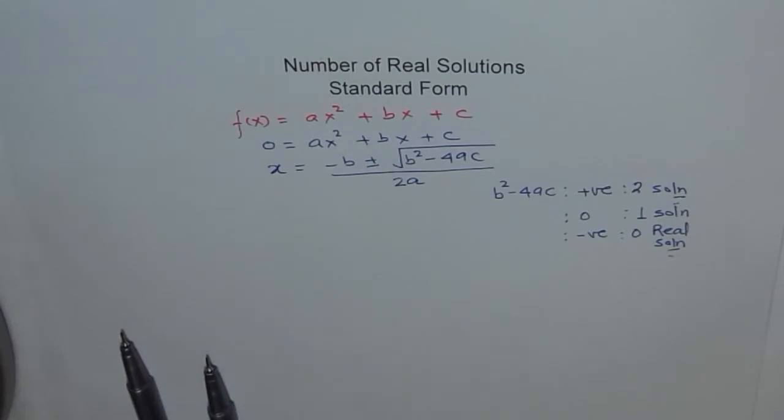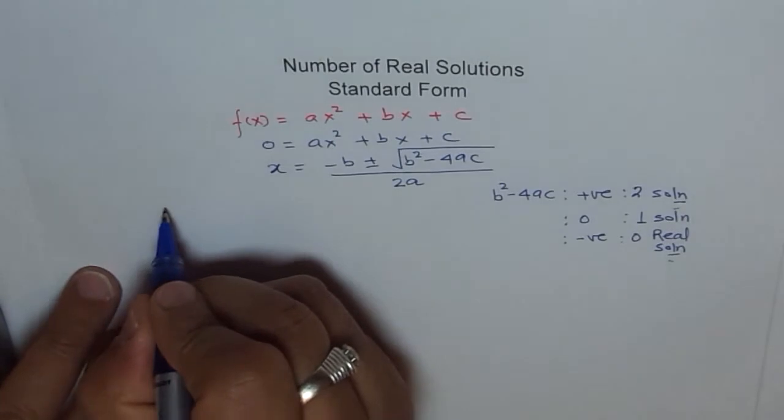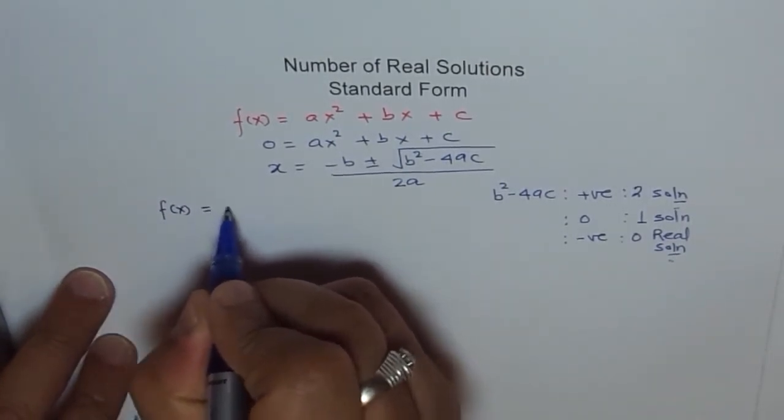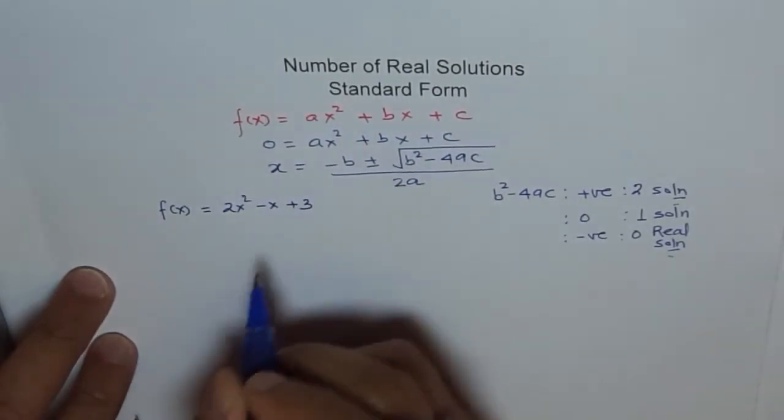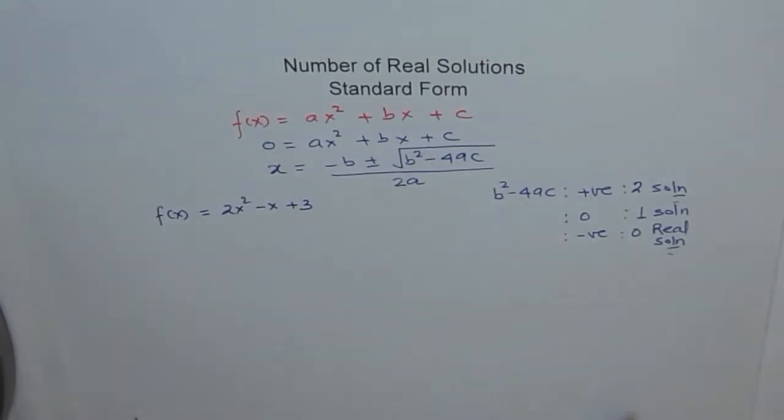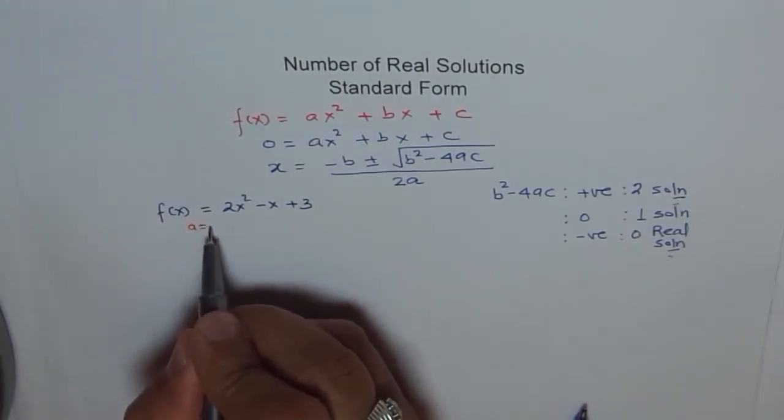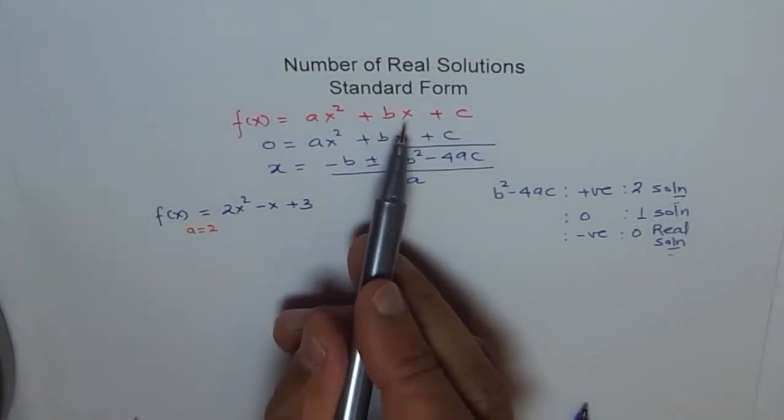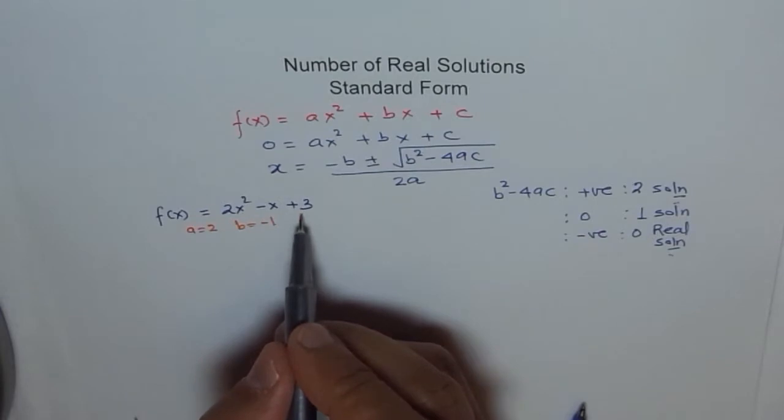So this is how we really test whether a standard equation for a quadratic function has one solution, two solutions, or no solutions. Now, what we will do as an exercise is try to find number of solutions for the given equation. Let us say if I have x square equals to 2x square minus x plus 3. Then what is b square minus 4ac? Well, let us first try to understand what is a, what is b, and what is c. a is coefficient of x square, which is 2. So a equals to 2. b is coefficient of x, so we say b equals to minus 1. And c is the constant term. Here, in this case, it is 3.